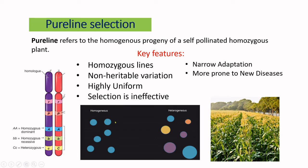Any differences from one individual to another in a pure line are due to environmental fluctuations such as irrigation or fertilizer. The line is highly uniform — one individual is quite similar to another because they are all genetically the same. Selection is ineffective in pure lines because any differences among plants are only due to environment, unlike a heterogeneous population where all individuals are genotypically different. Because of this high uniformity the genetic base is narrow, resulting in lesser chances of adaptation to new environments and more proneness to new diseases, insects, and pests.